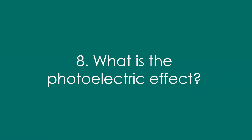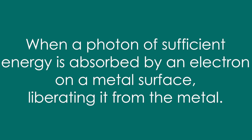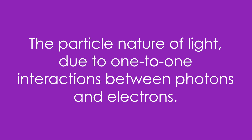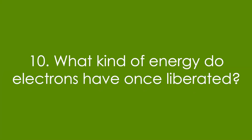Eight, what is the photoelectric effect? When a photon of sufficient energy is absorbed by an electron on a metal surface, liberating it from the metal. Nine, what does it prove and how? It proves the particle nature of light, due to one-to-one interactions between photons and electrons. Ten, what kind of energy do electrons have once they're liberated? Kinetic energy.